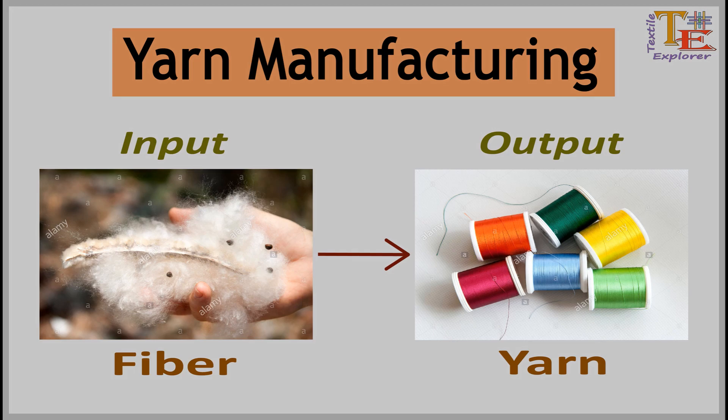Yarn manufacturing: the process by which we can convert fiber into yarn is called the process of yarn manufacturing. This manufacturing process is done in a spinning mill.